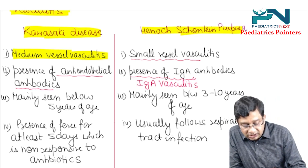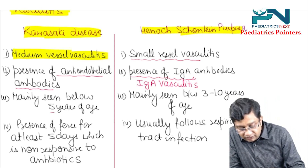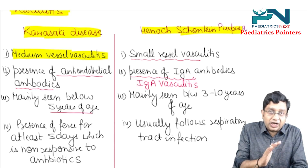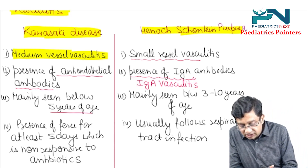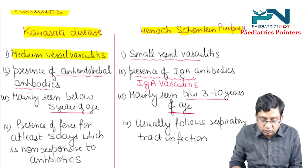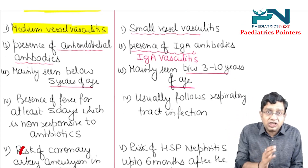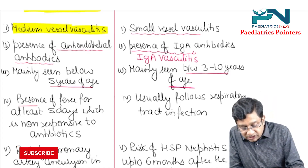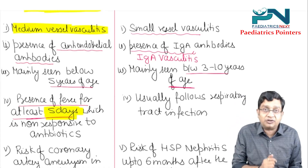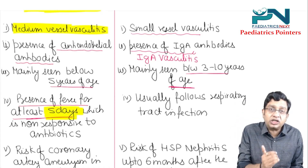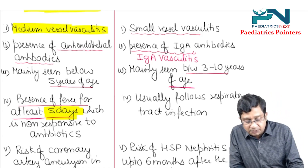Kawasaki disease is mainly seen below 5 years of age. The age group of HSP is between 3 to 10 years. In Kawasaki disease, there should be presence of fever for at least 5 days, which is non-responsive to antibiotics.